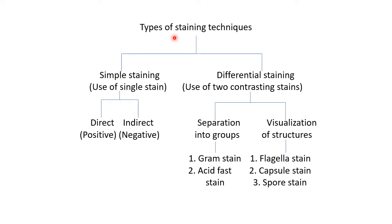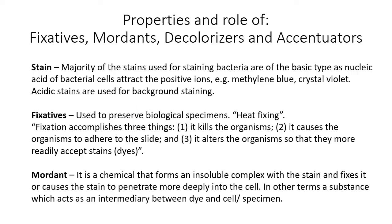Here is a simple flowchart to remember the types of staining techniques. They can be differentiated as simple staining and differential staining. In simple staining, a single stain is used — this includes direct staining (positive) and indirect staining (negative). In differential staining, two contrasting stains are used, helping separate bacteria into groups such as Gram staining (Gram positive/Gram negative) and acid-fast staining (acid-fast/non-acid-fast). There are also structural staining techniques to visualize flagella, capsule, and endospore.